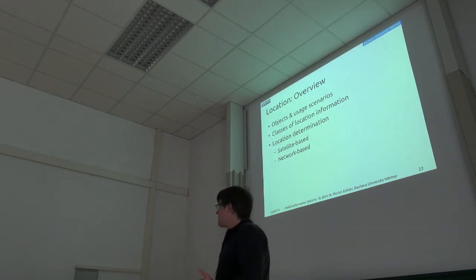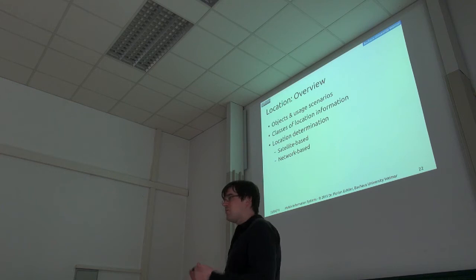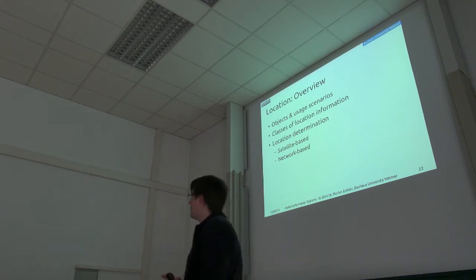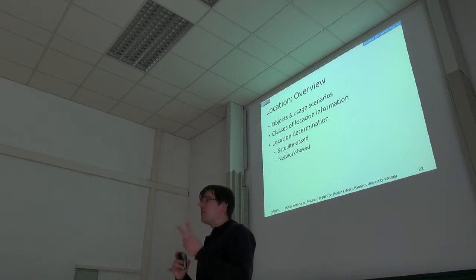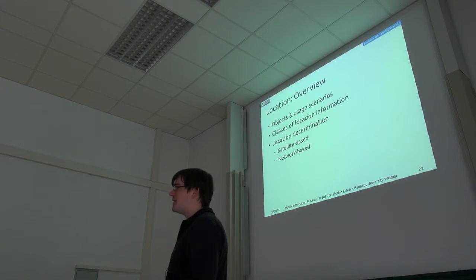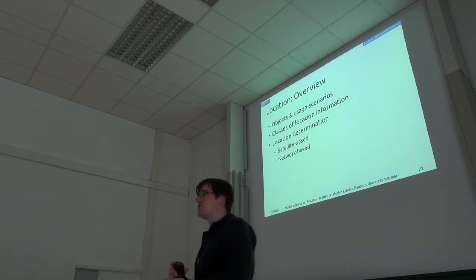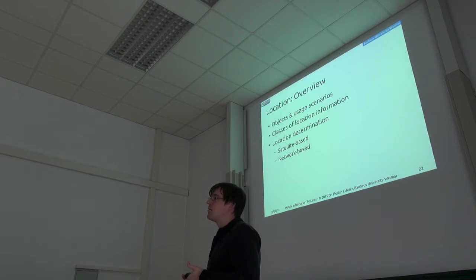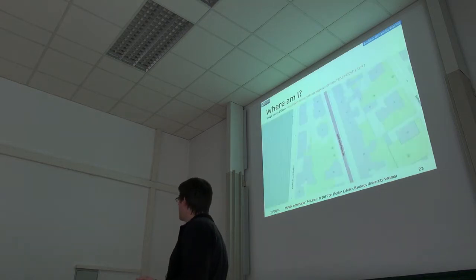First of all, I'd briefly like to talk about what location actually means in this context and what different types of location information we have, and then also about how you can determine the location of a mobile device. There's two major approaches. One is by using satellites, and one is by using the networks it's connected to, and both have their advantages and drawbacks.